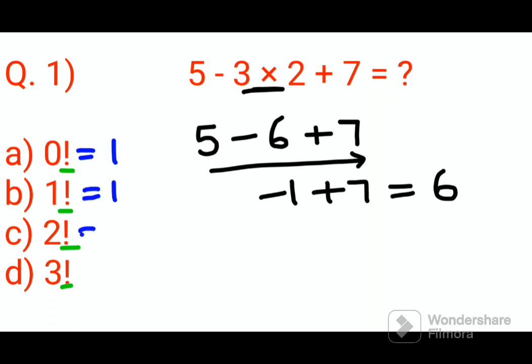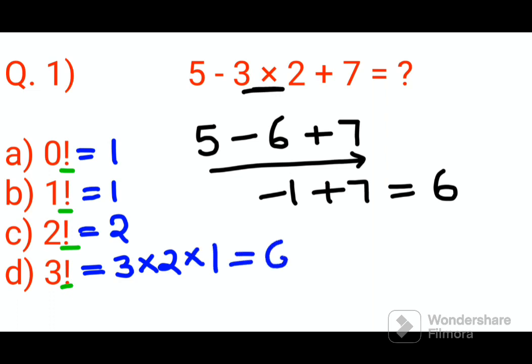2 factorial is 2 into 1, which gets you 2. 3 factorial is 3 into 2 into 1, which gets you 6. So 6 is your answer. Do like, share, and subscribe.